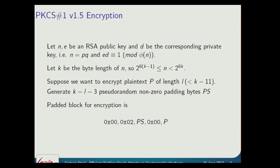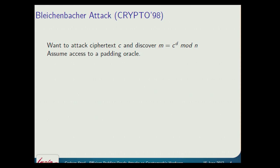Now we go back to 1998. Bill Clinton is president. A company called Google is just being founded, and little knowing he would be working for Google 14 years later, Daniel Bleichenbacher is presenting this attack. We want to attack some ciphertext C and discover what the plaintext M is. We know M equals C raised to the decryption exponent D modulo N, and we assume we have access to a padding oracle.